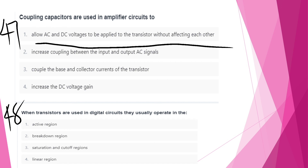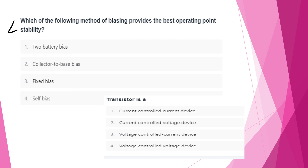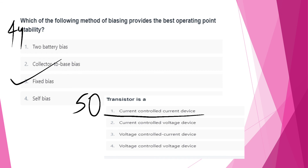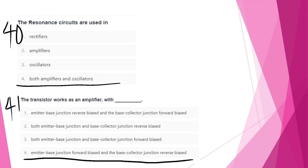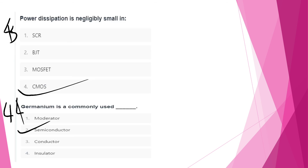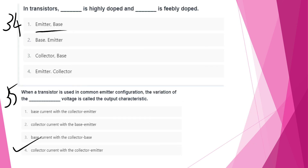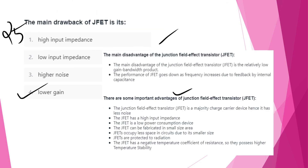When transistors are used in digital circuits, they usually operate in saturation and cut-off regions. The biasing method that provides the best operating point stability is voltage divider (transistor) bias. Transistors are current-controlled devices. These are the 50 questions — the maximum questions you may be asked. Please check different question papers and join the Telegram group for more questions. Thank you.